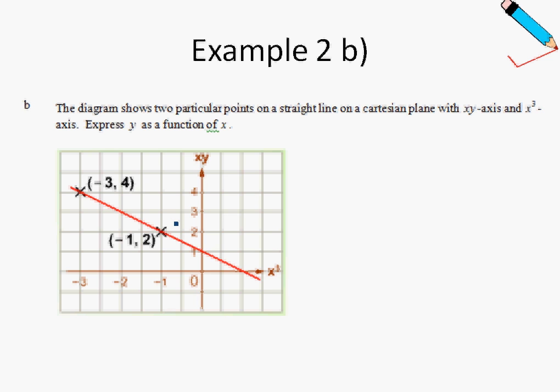So we are given two points, and we want to express y as a function of x. Now, the most important thing to take note for this example is that your y-axis is xy, and then your x-axis is x cubed. So once again, let me just write this over here to remind you guys. So my y-axis is xy, and my x-axis is x cubed.